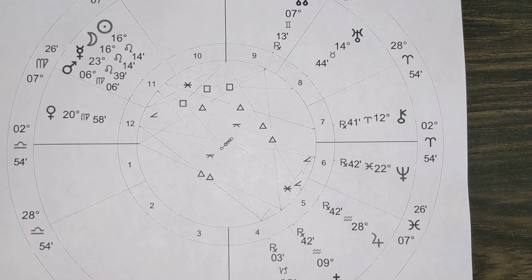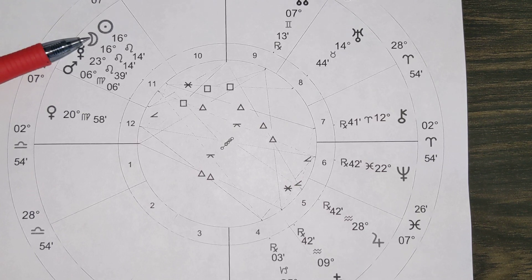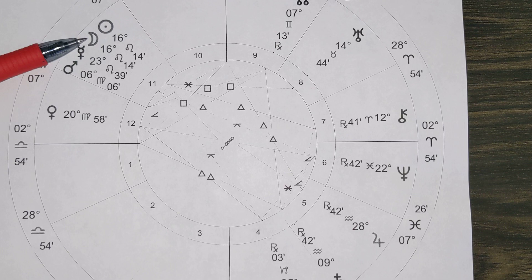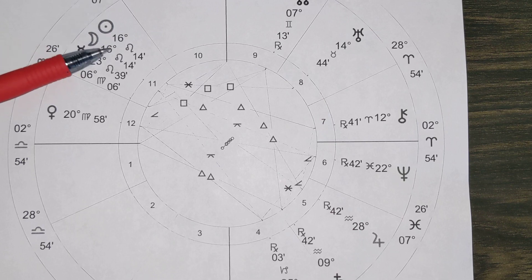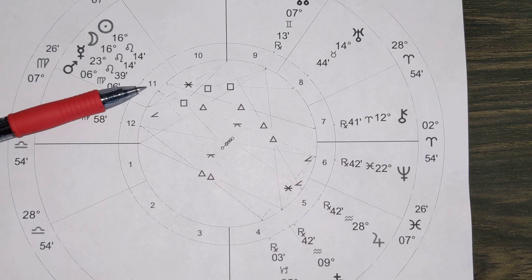So the New Moon is happening at 16 degrees of Leo and this is the point you want to find in your natal chart where you have 16 degrees of Leo. I do have a separate video for you that's titled how to find a degree point in your chart that will help you identify where this is happening for you and which house the energy is showing up.